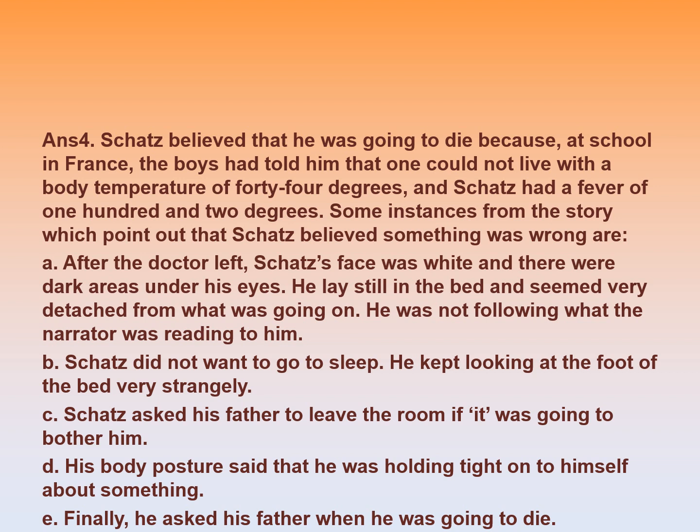Some instances from the story which point out that Skatz believed something was wrong are: (a) After the doctor left, Skatz's face was white and there were dark areas under his eyes; he lay still in bed and seemed very detached. (b) He was not following what the narrator was reading to him. (c) Skatz did not want to go to sleep and kept looking at the foot of his bed very strangely. (d) Skatz asked his father to leave the room if it was going to bother him. (e) His body posture said that he was holding tight on to himself about something. Finally, he asked his father when he was going to die.